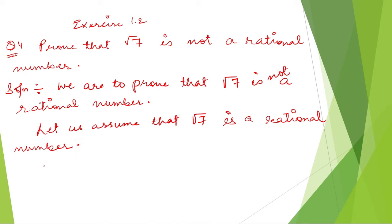Then we can write p by q equals root 7. Squaring both sides, we have p squared by q squared equals 7. And I can write p squared equals 7q.